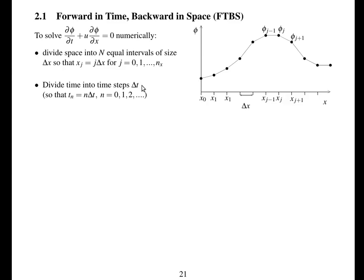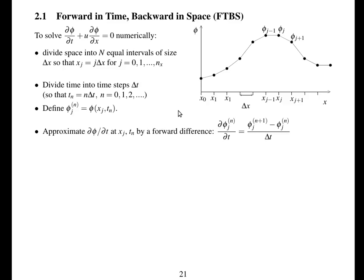We're going to divide time into time steps of size delta t, so that time t_n equals n times delta t, for n equals zero, one, two, and so on. We define phi at position j, time n using this notation — that's phi at position x_j, time t_n. We then approximate d phi by dt at position x_j, time t_n using a forward difference: d phi by dt at time level n equals phi at time level n+1 minus phi at time level n, divided by delta t.